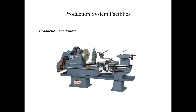These machines can be manually operated, semi-automated, or fully automated. Examples of these machines include lathe machines, milling machines, drilling machines, shapers, slotters, grinders, injection molding machines, extrusion molding machines, blow molding machines, thermoformers, welding equipment, and spray painting equipment.